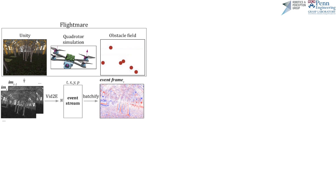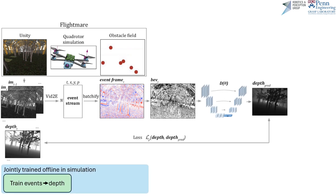To solve this problem, we offline train events to action in two steps. A privileged expert policy flies through the FlightMare simulation environment. We use VID2E to generate estimated events from collected image sequences.